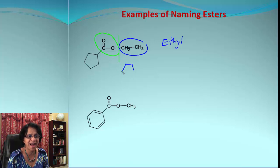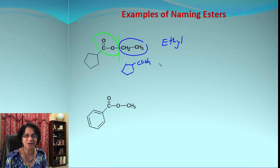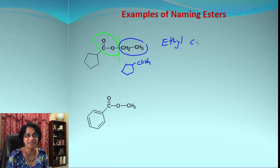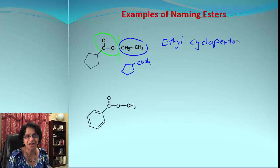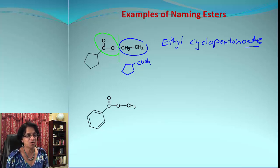If I had to draw the parent acid, that would be COOH — that would be cyclopentanoic acid. So this will be ethyl, and we change that pentanoic acid ending to pentanoate: ethyl cyclopentanoate.